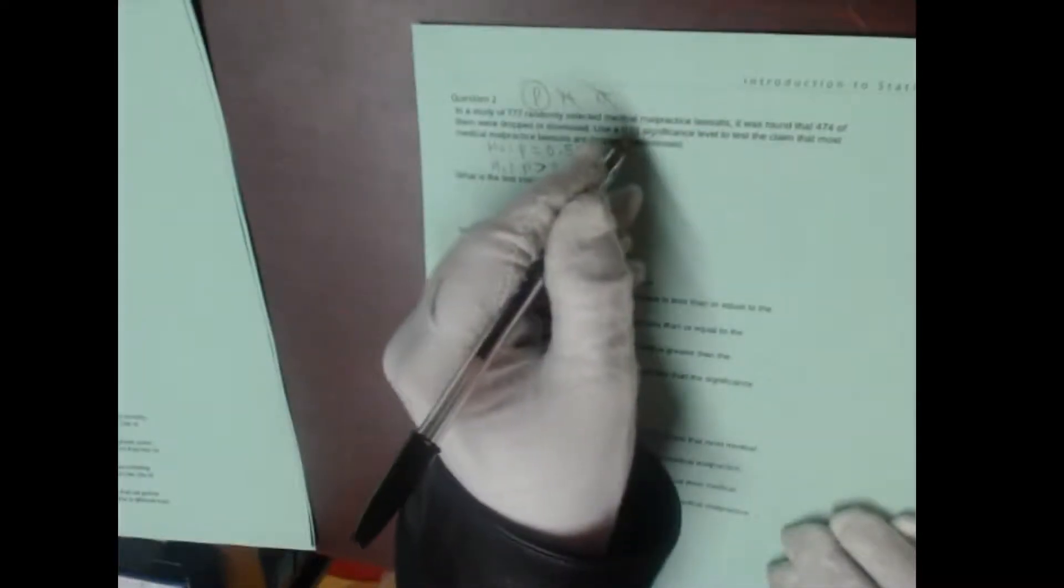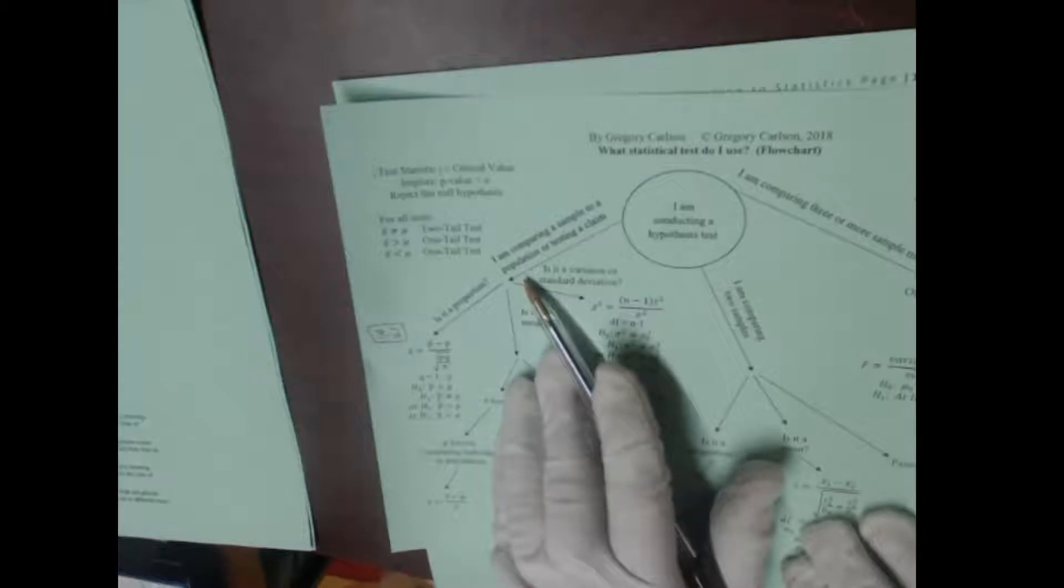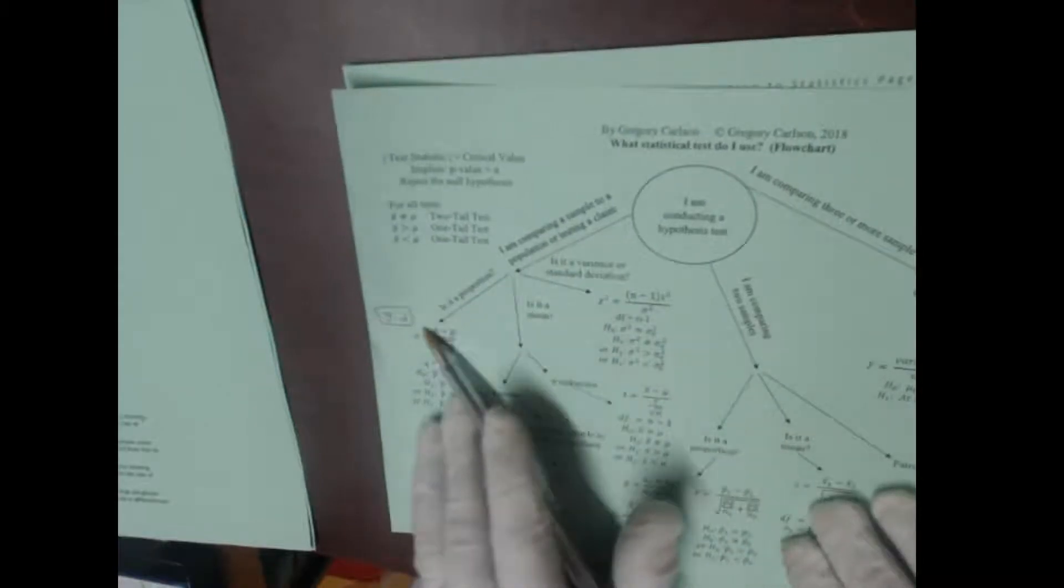Okay, we're doing an alpha level of 0.01, and so let's figure out which one is the test we should use. I'm conducting a hypothesis test. We're testing a claim or comparing a sample to a population, and we're doing a proportion. So here's your formula right here that you're going to use. So I'm going to write the formula over here.